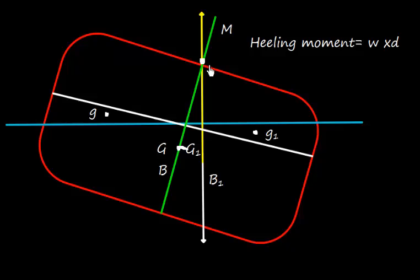The new force of buoyancy will cut the old force of buoyancy at point M, which is metacenter. If this angle is theta, then we can easily make out tan theta equals GG1 by GM.